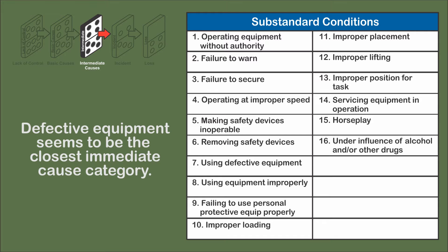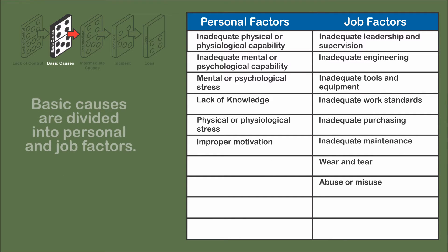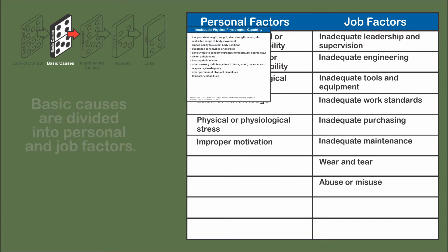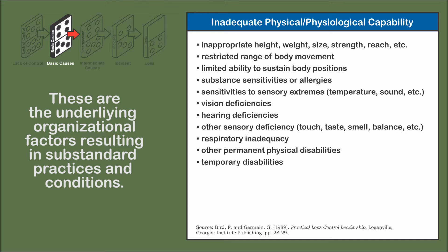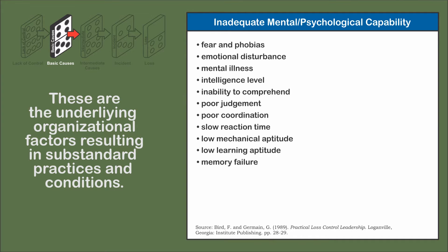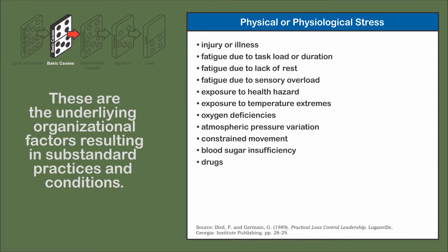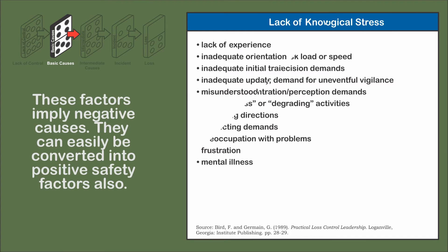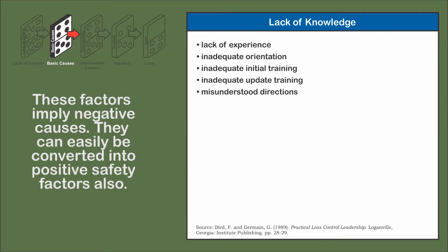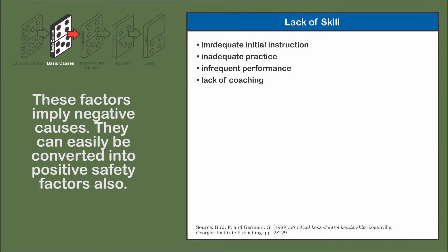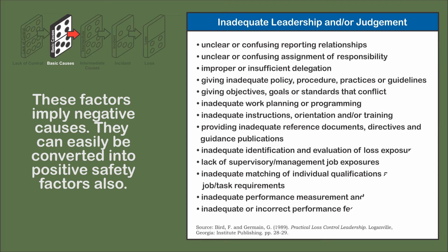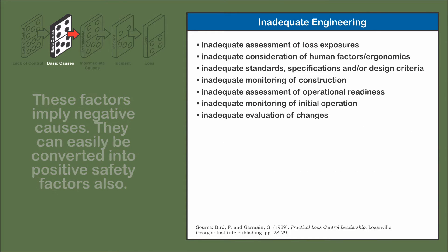Examining substandard practices suggests defective equipment is the immediate cause of the tire incident. Basic causes are the second layer of causes. Divided into personal and job factors, they are the underlying causes behind the substandard practices and conditions. They help explain why people perform substandard practices. As evident from the massive listing of factors, the basic causes constitute a large set of variables. Consult Byrd and Germain for the full expansion of this list.